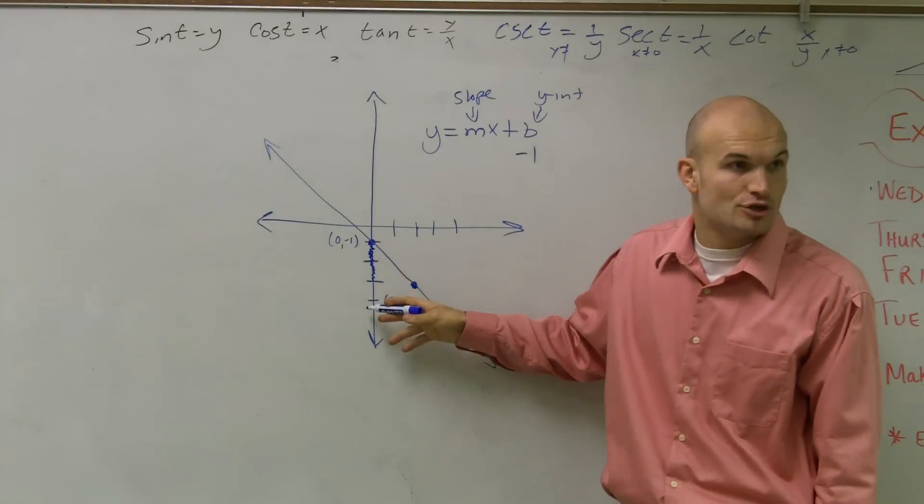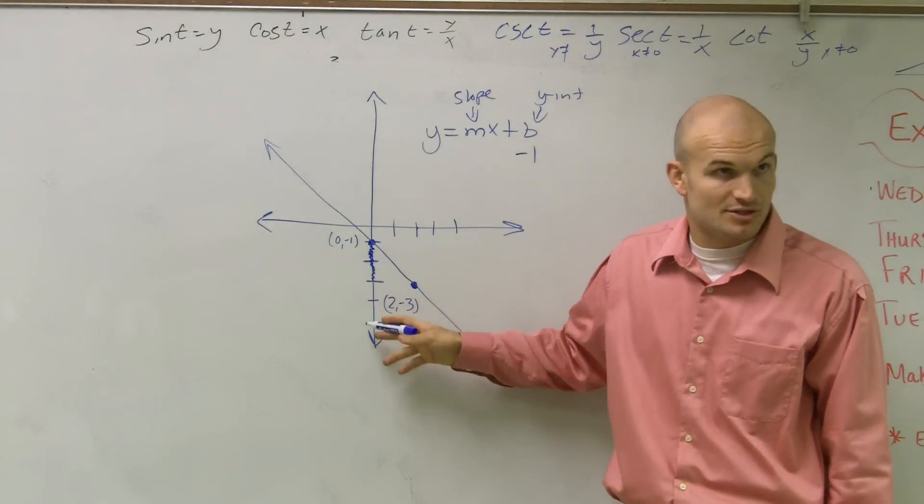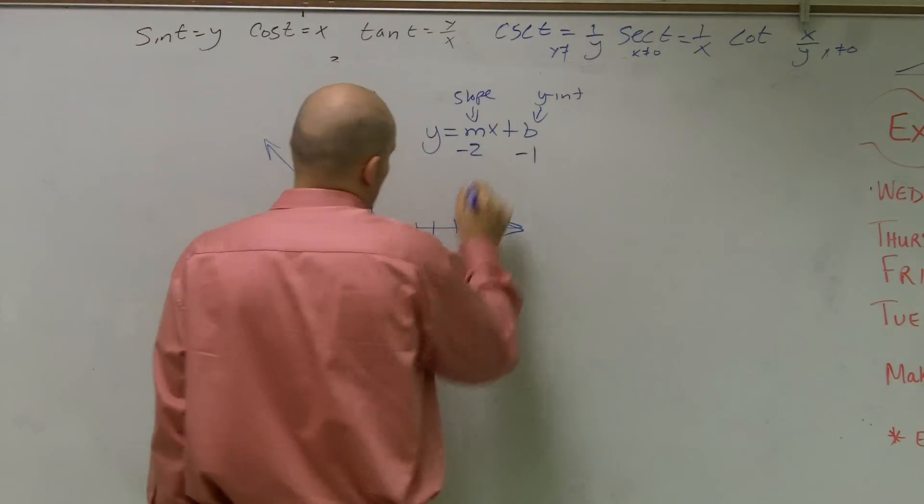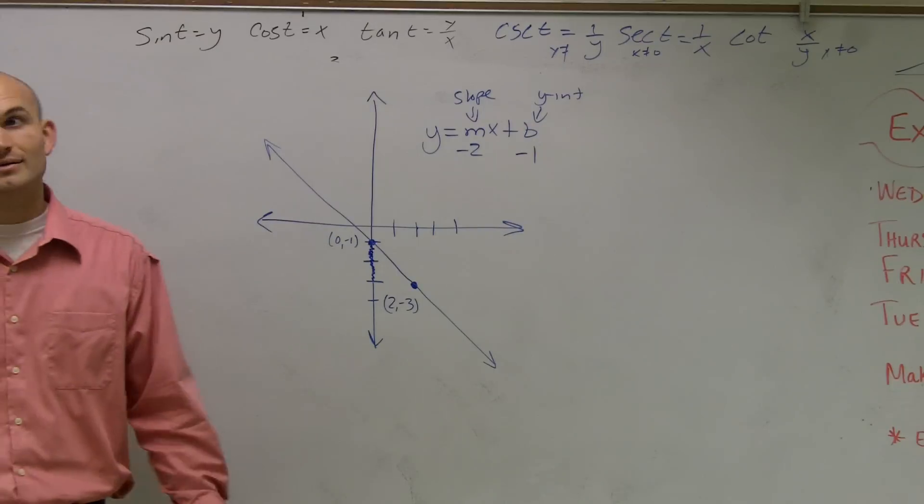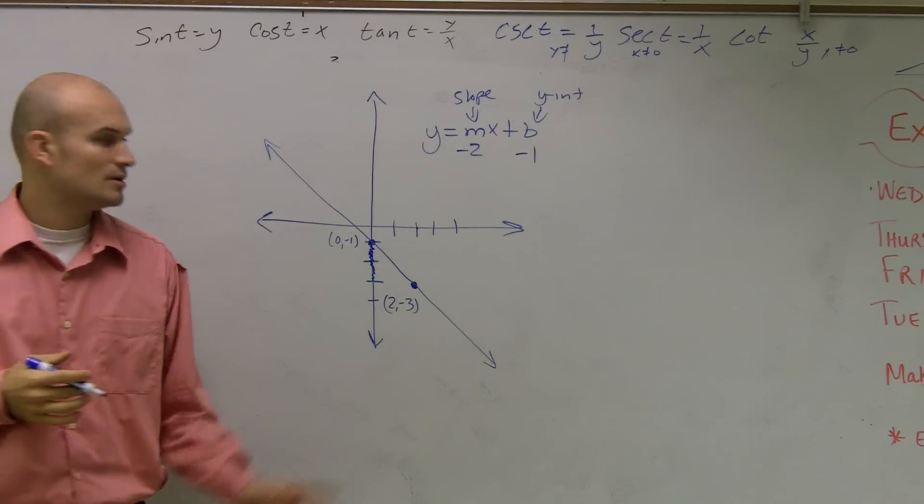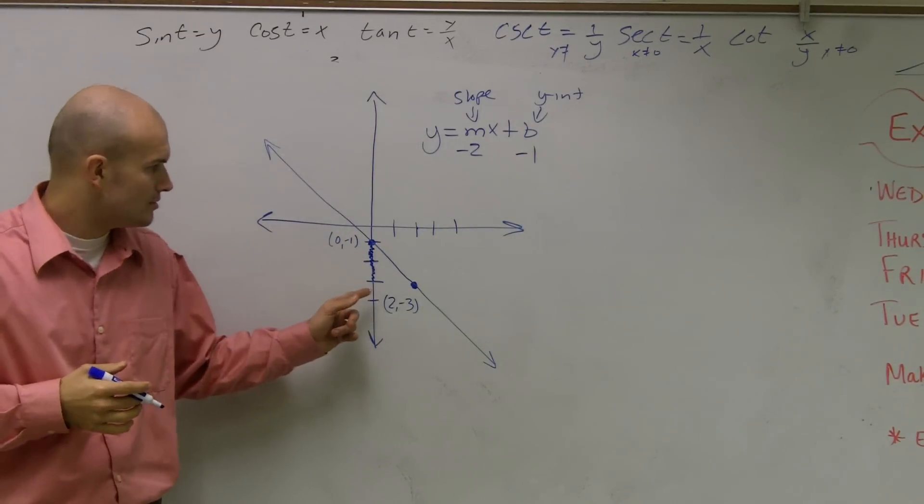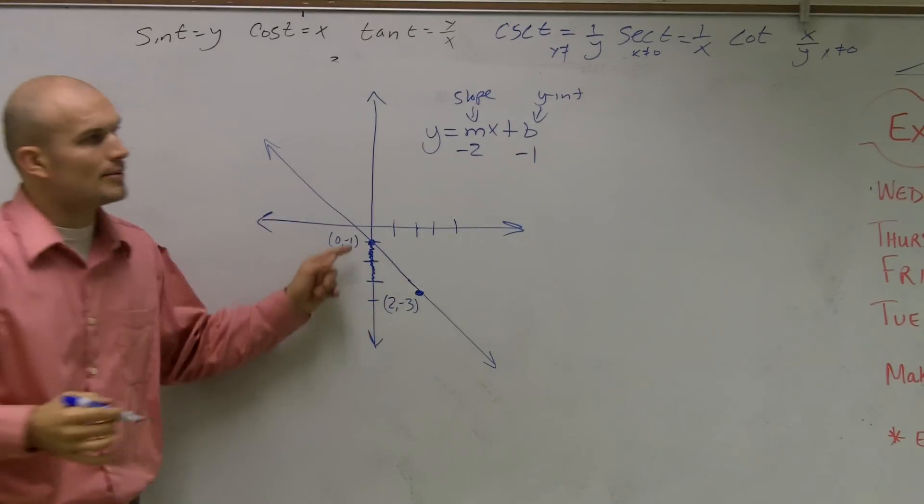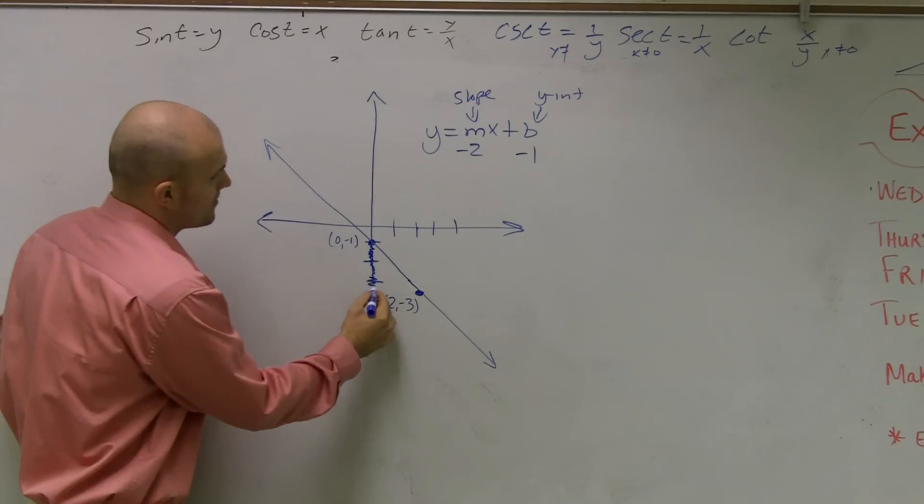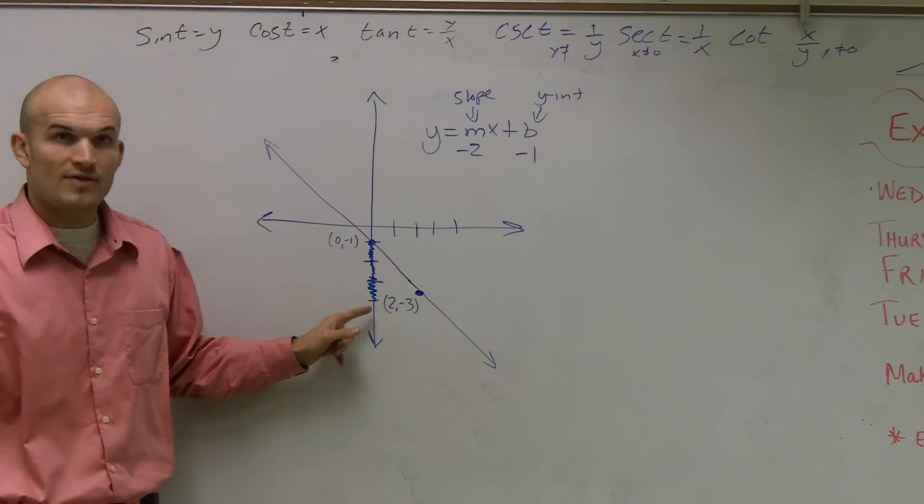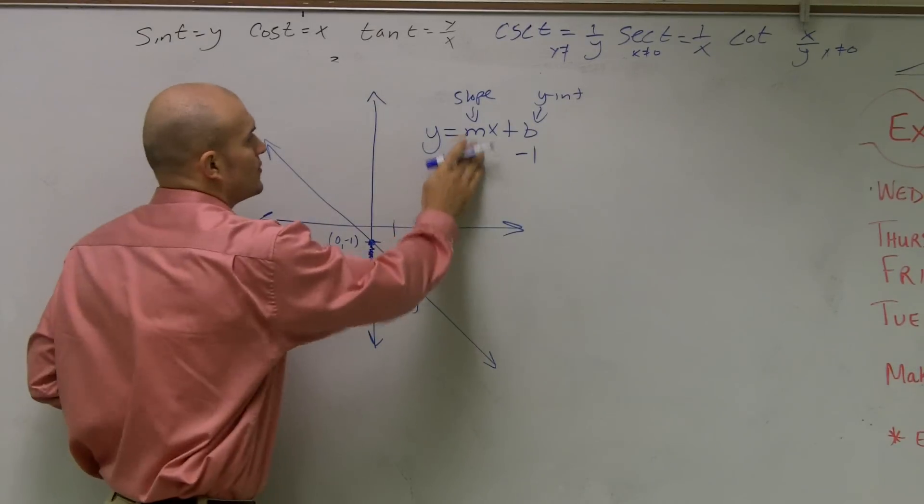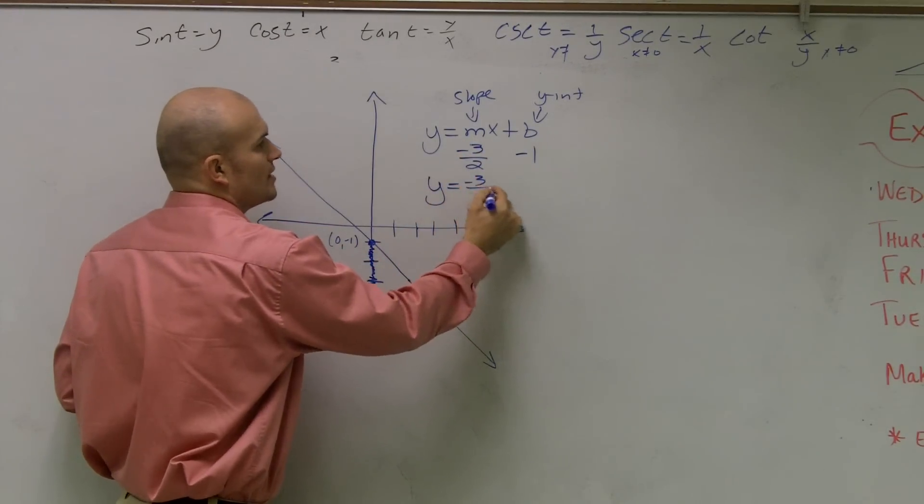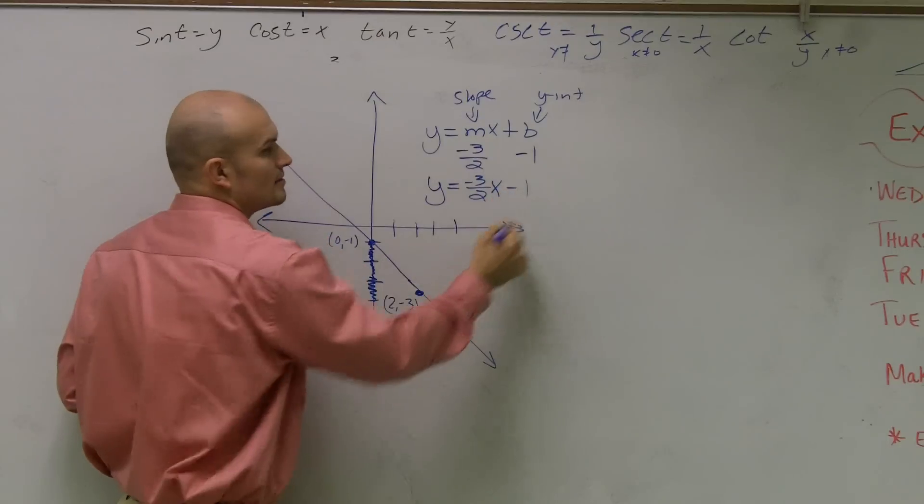Well, you could say you're going down 2, right? Going down 2, so it's down 2 is going to be a negative 2. Actually, I'm sorry, this is a bad point. I'm going down 3, then I'm going over 2. So we're going down 3 over 2. So my equation is y equals negative 3/2 x minus 1.